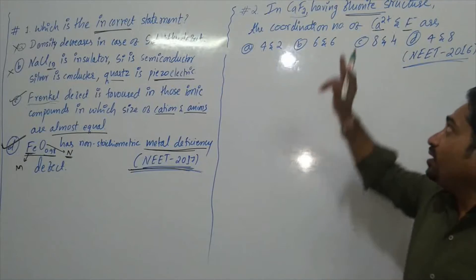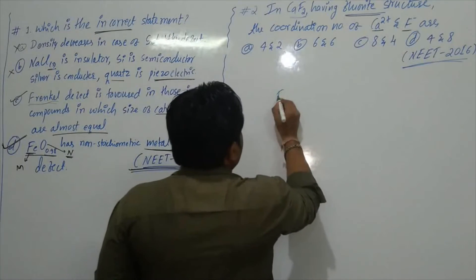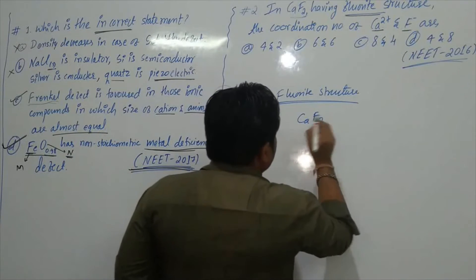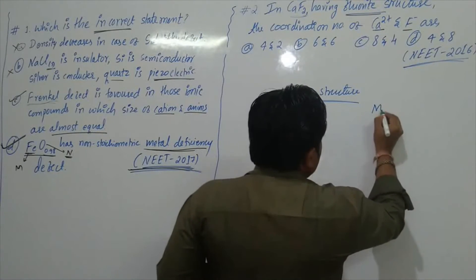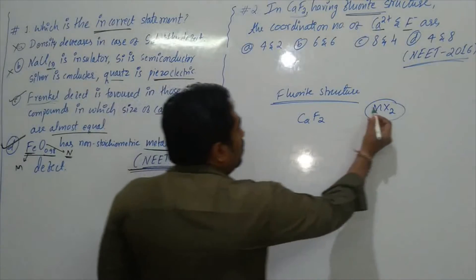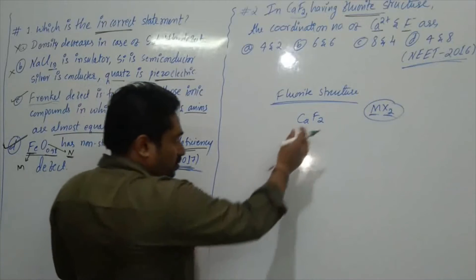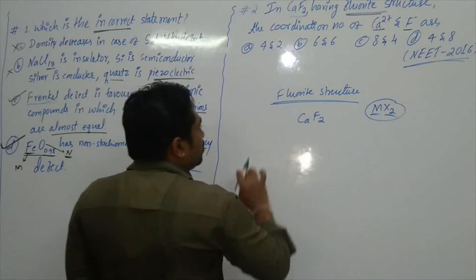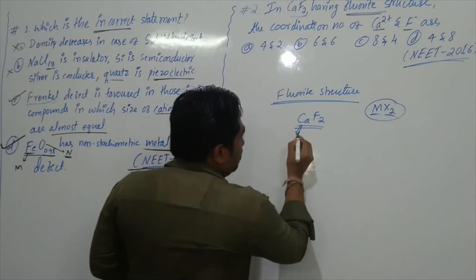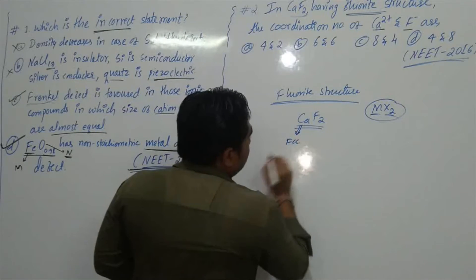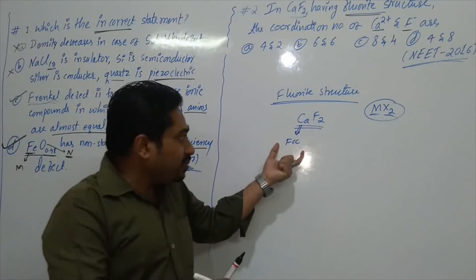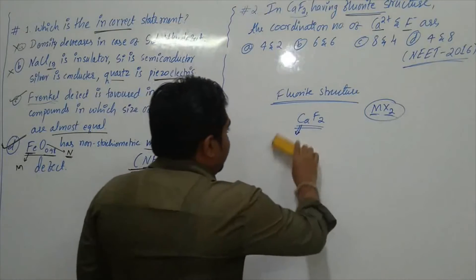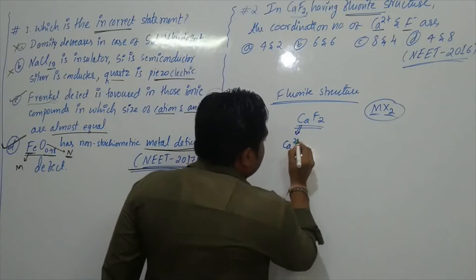The fluorite structure is one of many structures for ionic compounds. The best example of fluorite structure is calcium fluoride, CaF₂. It is given as MX₂ type — for one metal ion there are two non-metal ions. Some halides such as magnesium halide and calcium halide have this structure. In this structure, calcium ions occupy the FCC lattice positions.